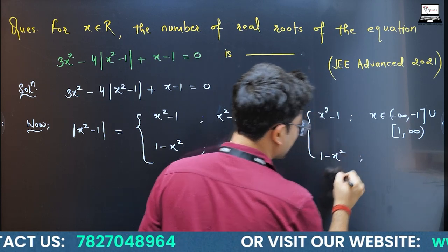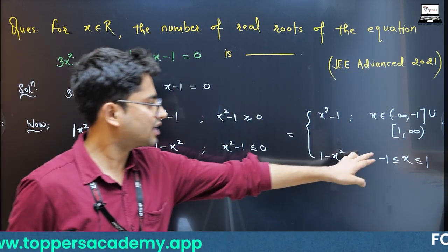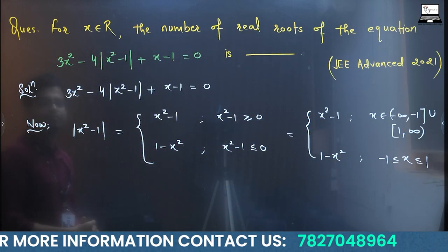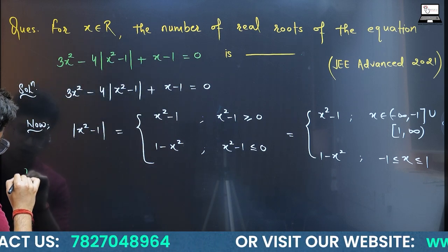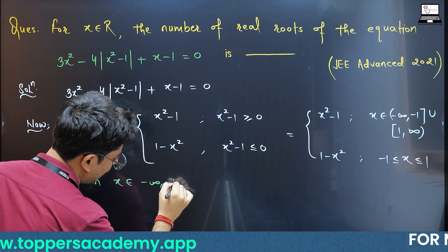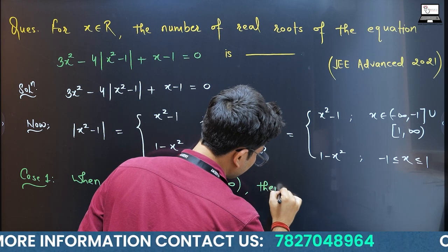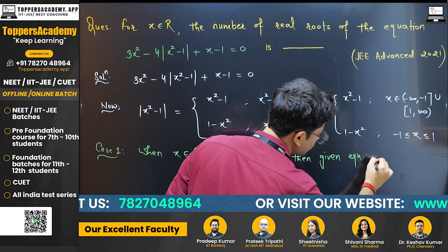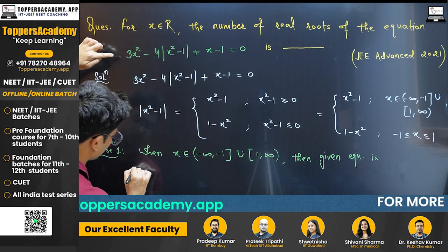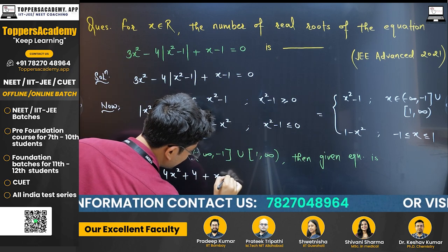So |x² - 1| = 1 - x² when x lies between -1 to 1, and |x² - 1| = x² - 1 when x belongs to (-∞, -1) ∪ (1, ∞). Let's look at Case 1: when x belongs to (-∞, -1) ∪ (1, ∞). Then the given equation becomes 3x² - 4(x² - 1) + x - 1 = 0.